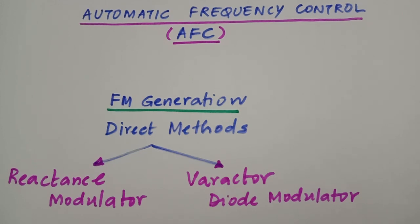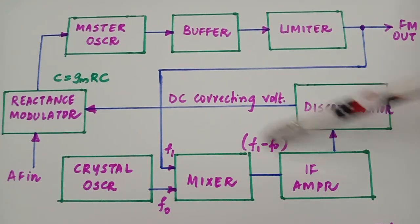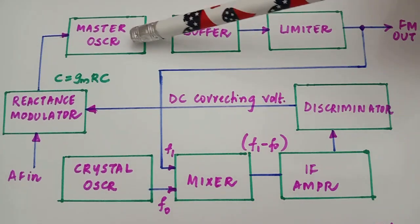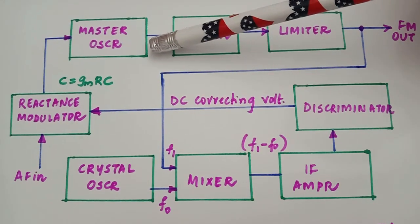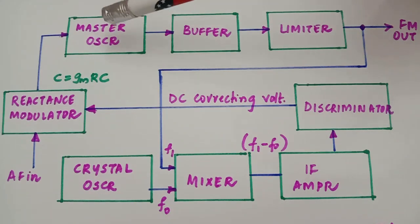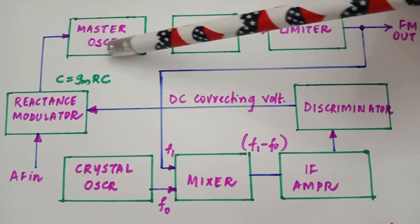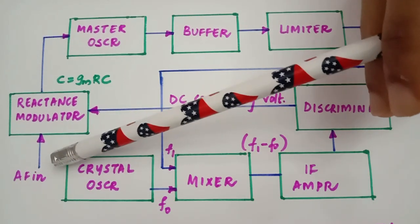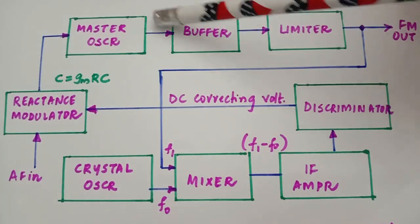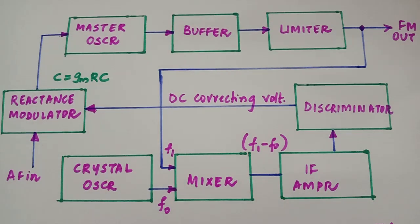This is the block diagram of a typical transmitter AFC system. Here you can see a master oscillator — this is an LC oscillator because we are using a reactance modulator. This master oscillator generates a carrier frequency. The reactance modulator is connected to this master oscillator, and according to the input variations in the modulating signal, the frequency of oscillation changes, giving us the FM output.